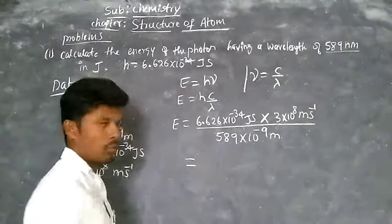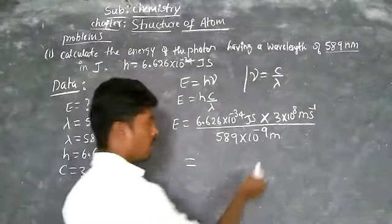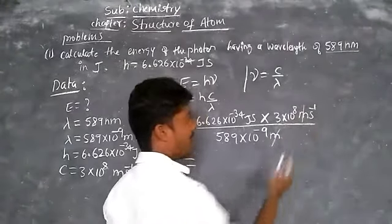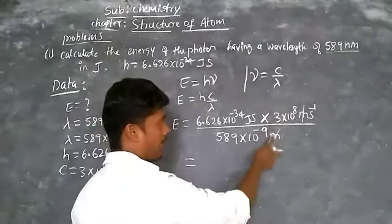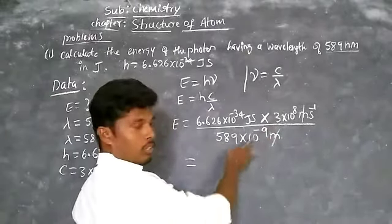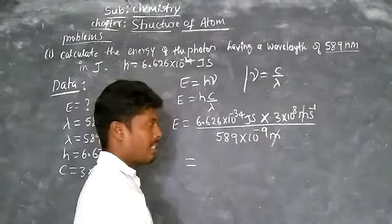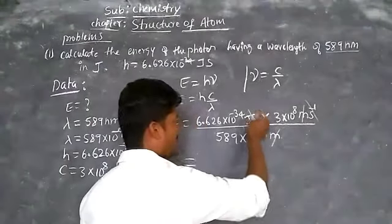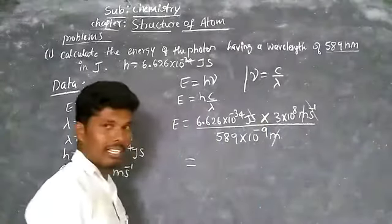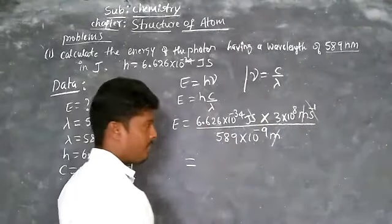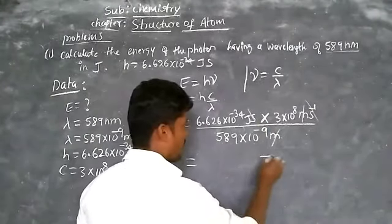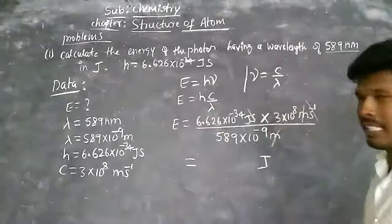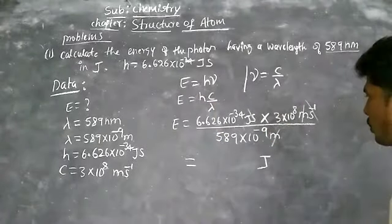Now observe: meters in numerator and denominator cancel out, per second and second cancel out. What remains is only joules. So simplify all values and cancel the powers.